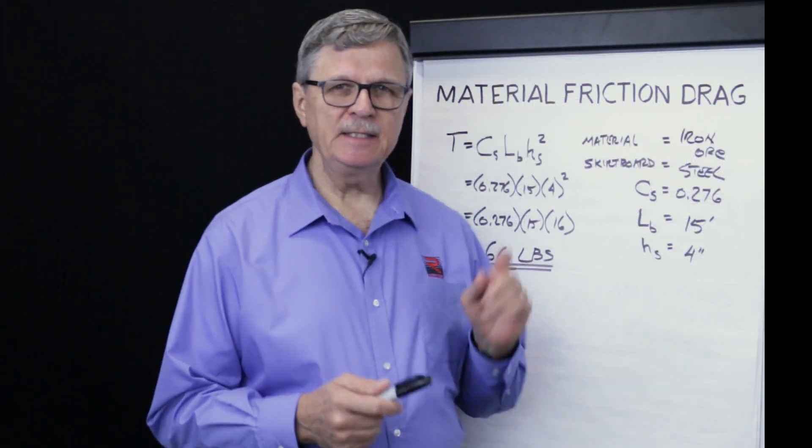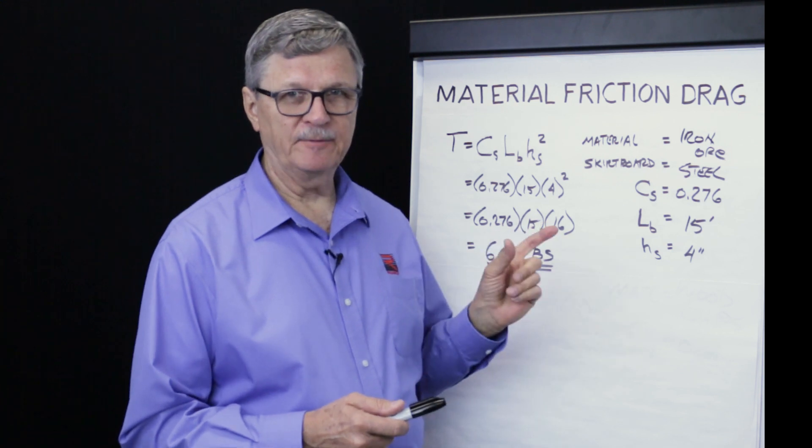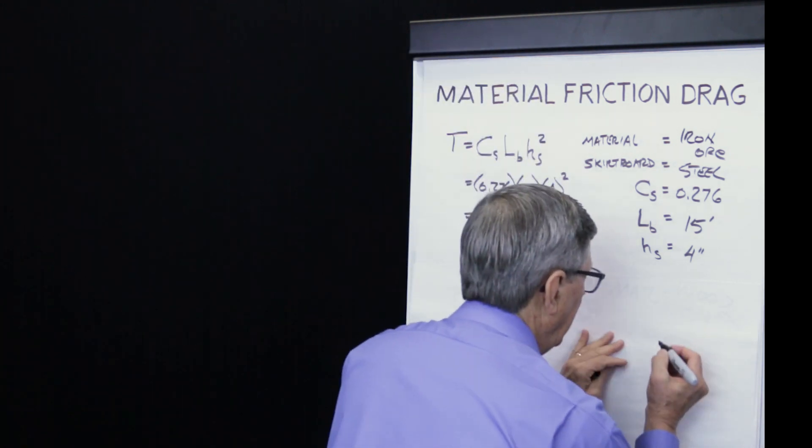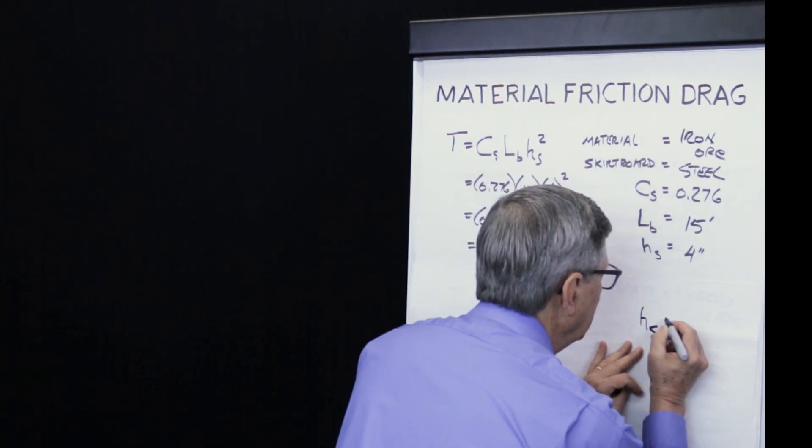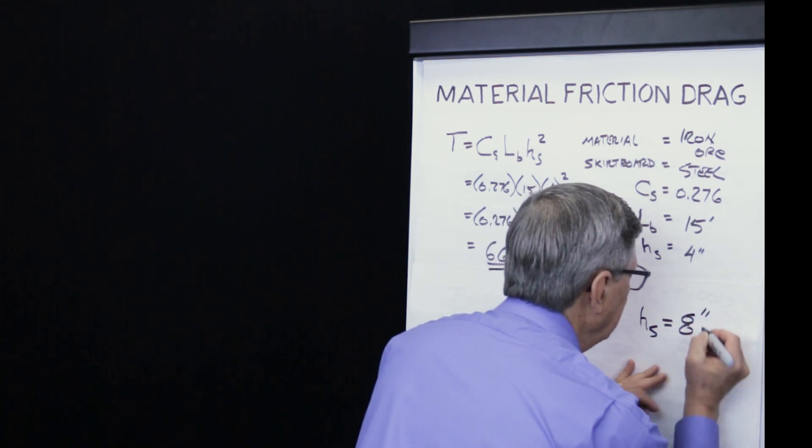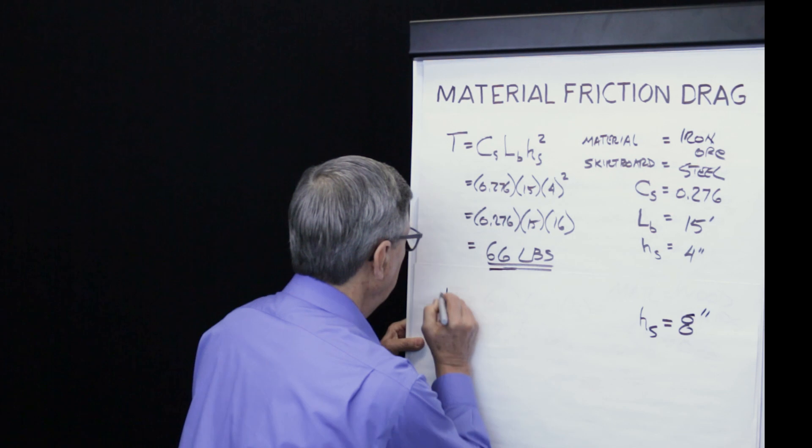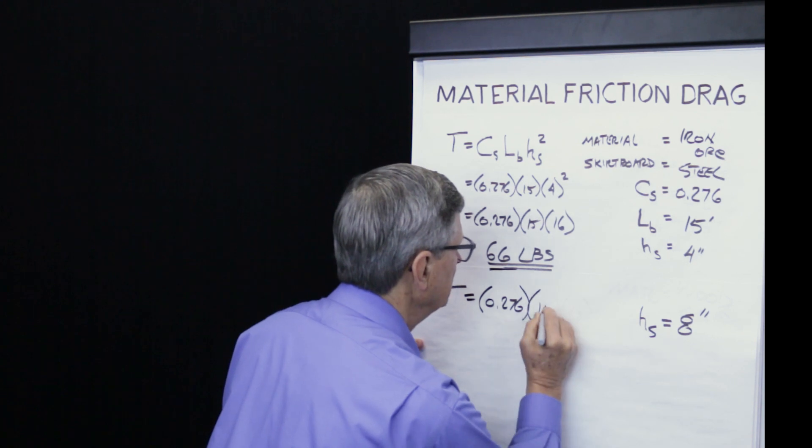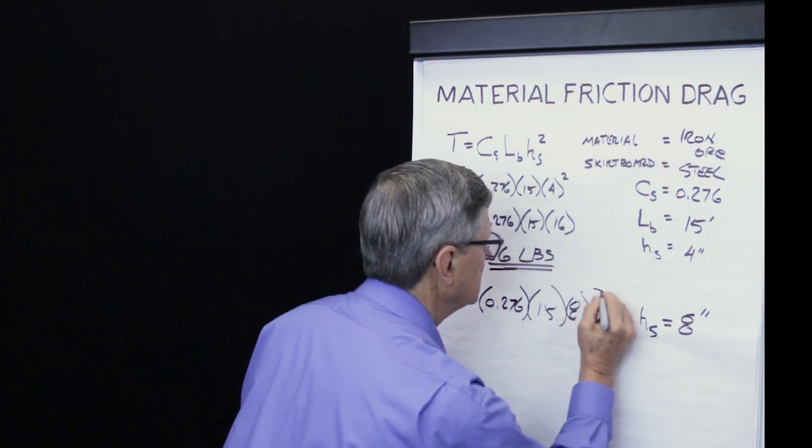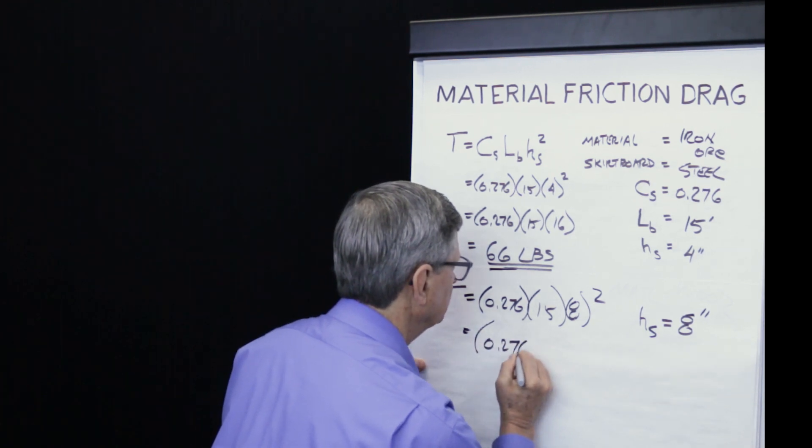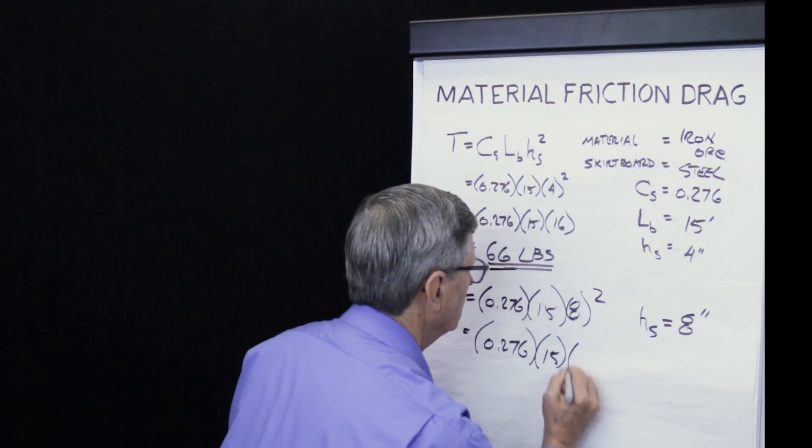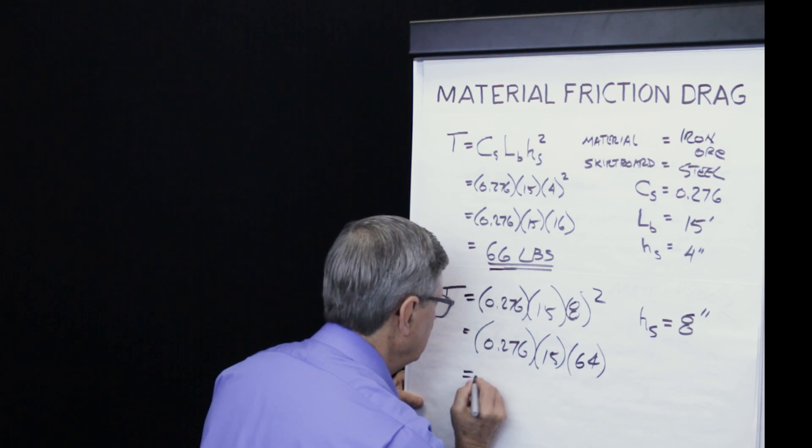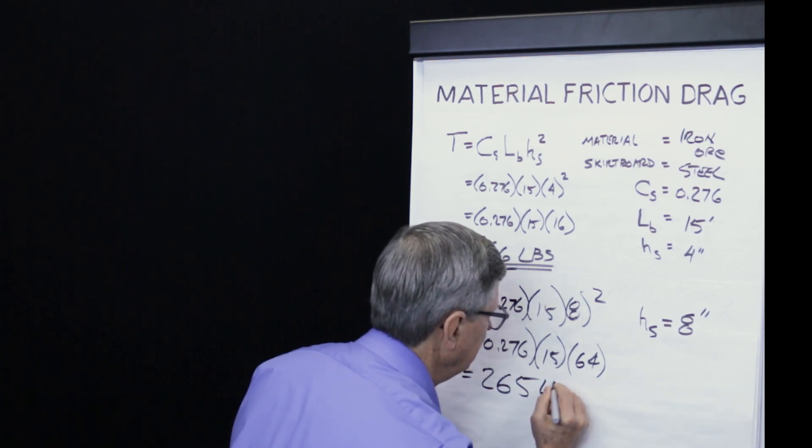Now let's examine how sensitive the results are to the material depth. We're going to keep all the parameters the same as before in the iron ore case, except we're going to set the depth of material equal to 8 inches instead of 4 inches. Now our drag becomes 0.276 times 15 times 8 squared, which equals 0.276 times 15 times 64, which gives us a result of 265 pounds.